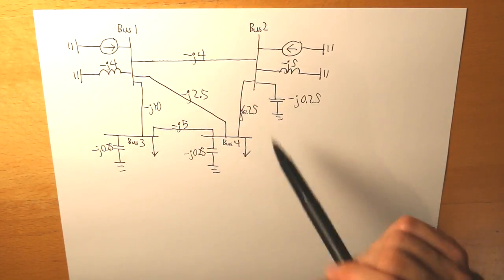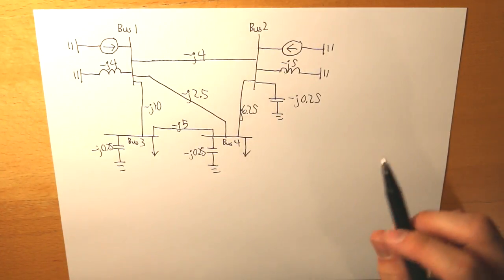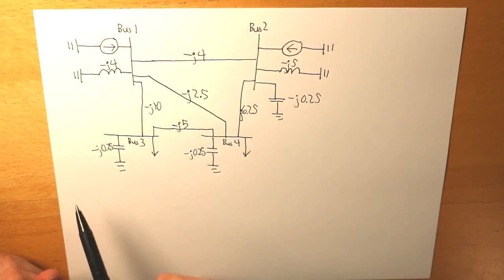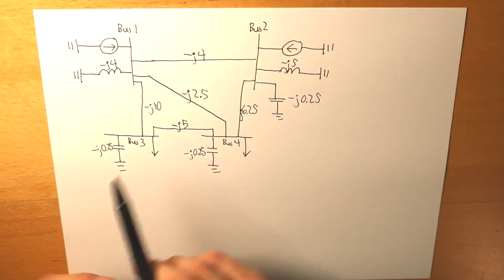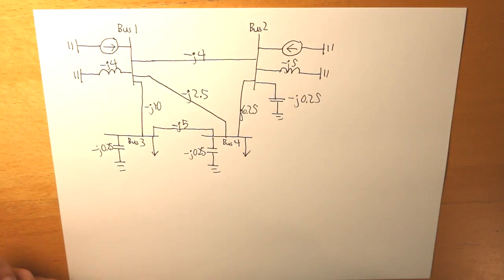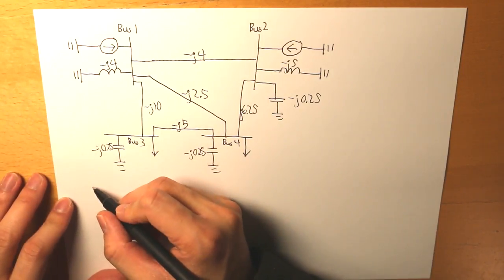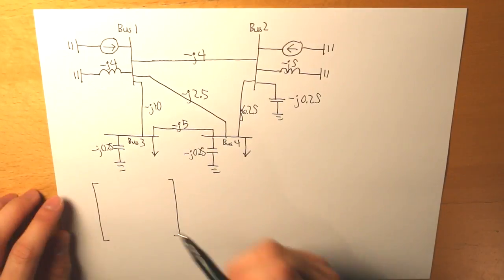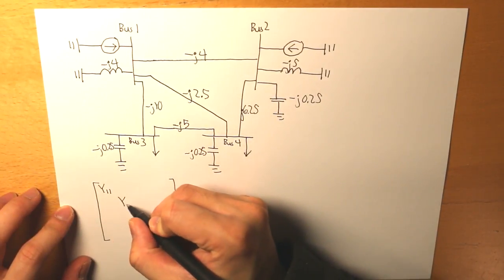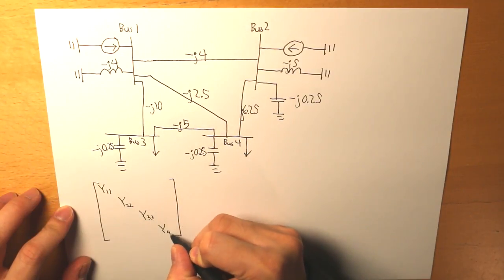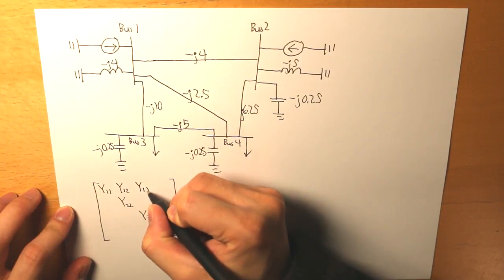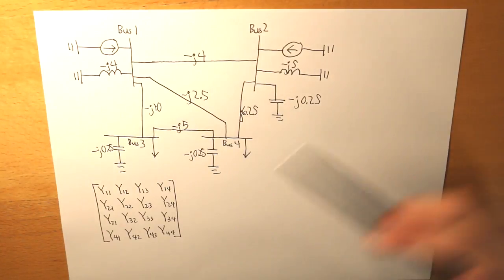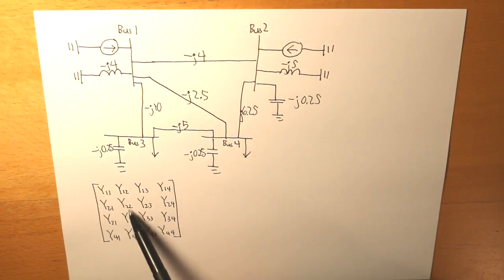Now we are going to develop our admittance matrix. Since there are four different buses, we are going to have a four-by-four admittance matrix. We draw the matrix with diagonal elements y11, y22, y33, and y44, along with all the off-diagonal terms. What we need to calculate first are the values of y11, y22, y33, and y44.